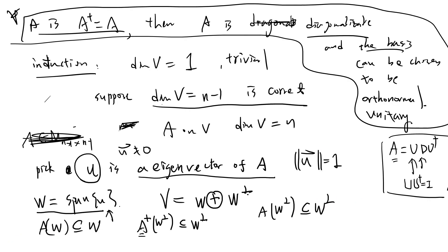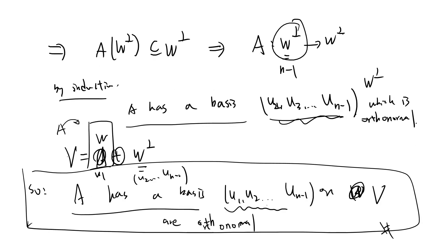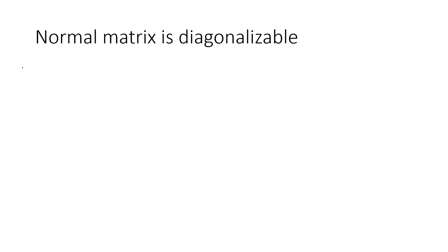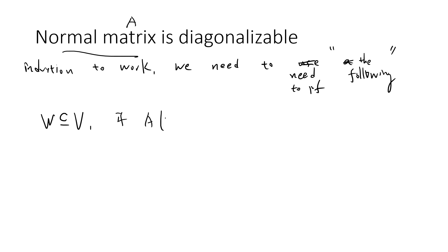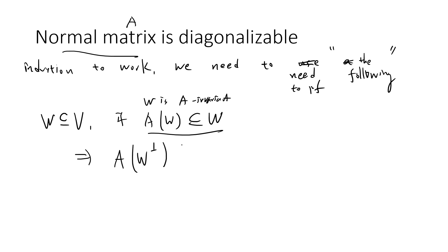In order to follow the proof by mathematical induction as before, what we need to prove is a lemma. For the induction to work, we need the following fact: if W is a subspace of the finite-dimensional vector space V, and A is a normal matrix such that A maps W into W — meaning W is A-invariant — then we hope to prove that A also maps the orthogonal complement W⊥ into W⊥.